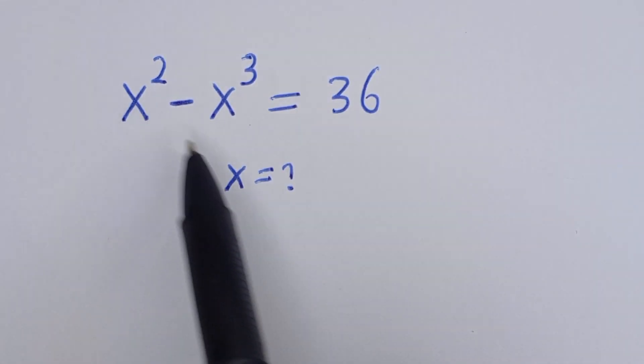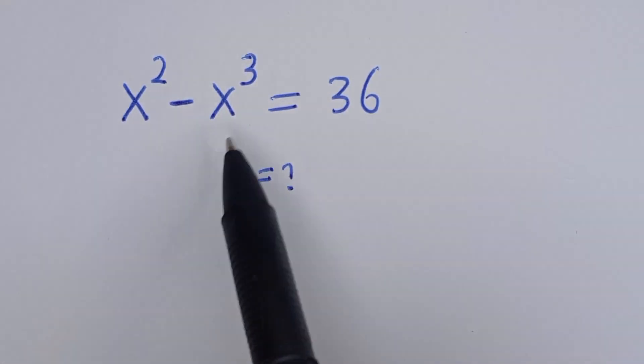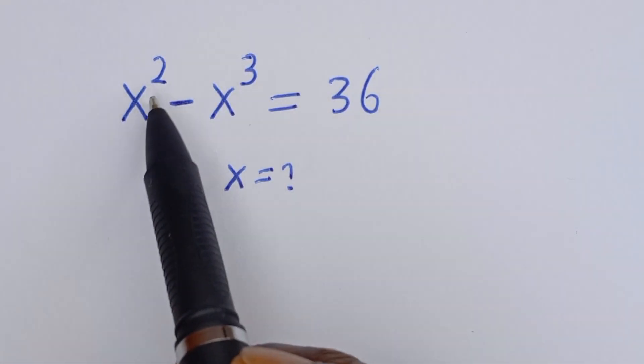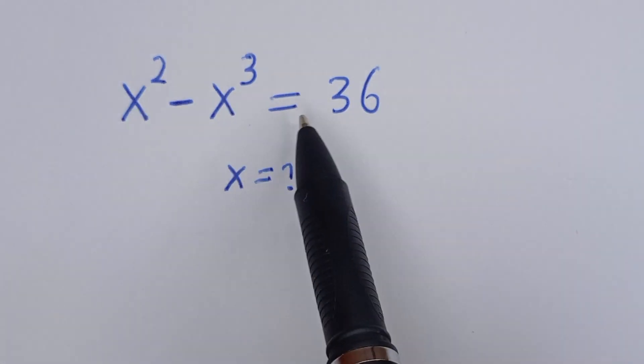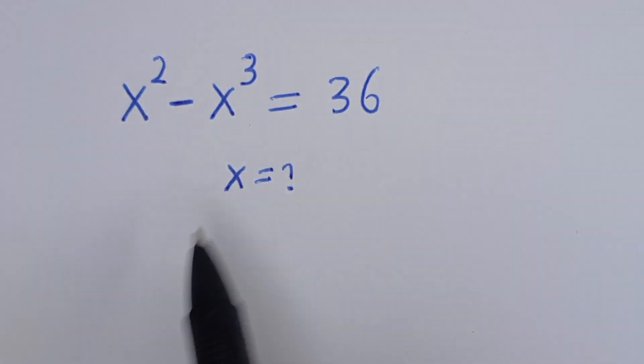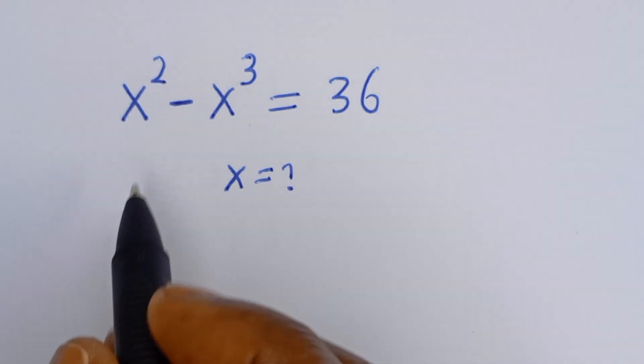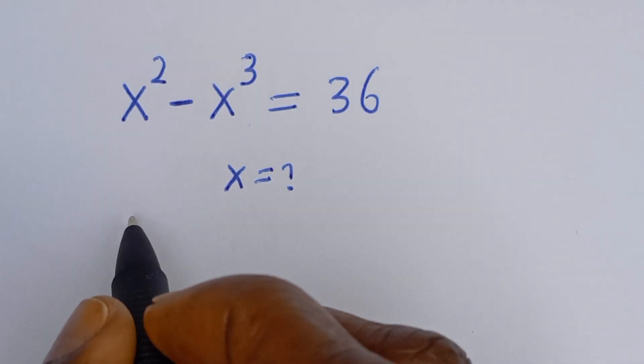Hello, how to solve for s in this equation: s squared minus s cubed is equal to 36.